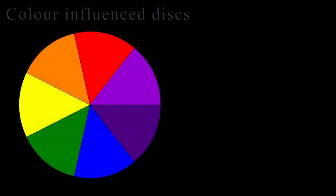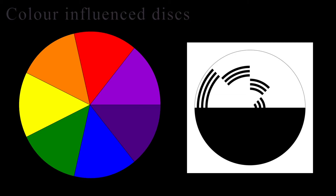My final optical illusions I looked into were color-influenced discs — specifically the Newton disc of primary colors and the Benham top, which shows the effects of Fechner color. The Newton wheel of primary colors, when rotated at high speeds, bleeds into just a white color, which I find a really cool effect. The Benham top creates the opposite effect, creating the illusion of color as it rotates at high speeds — and apparently this cannot be captured on video, which I find very interesting and I'd love to see it in person.